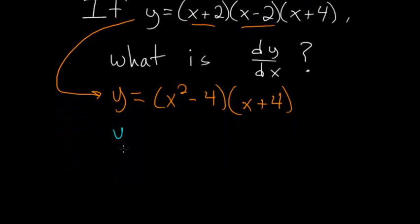So y is equal to x squared times x, or x cubed, plus 4 times x squared, minus 4 times x, or minus 4x, and then minus 4 times 4, which is minus 16.